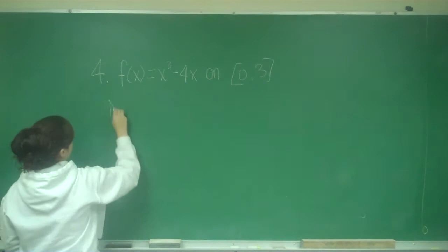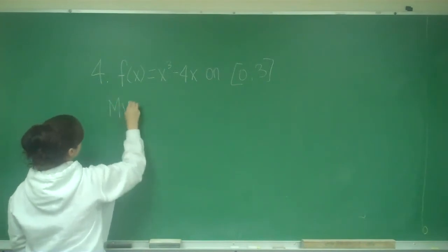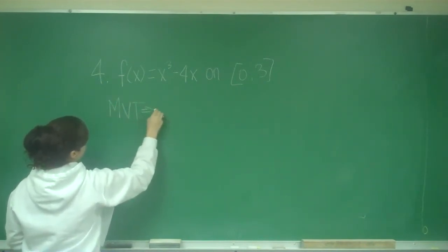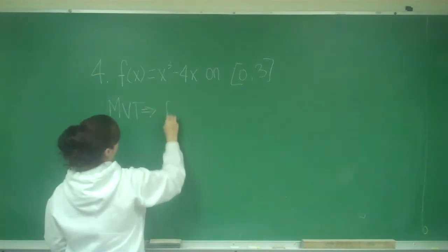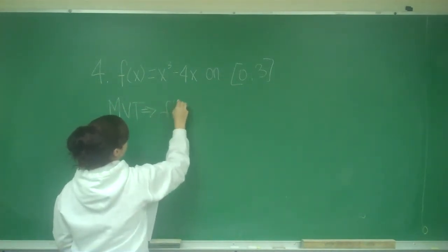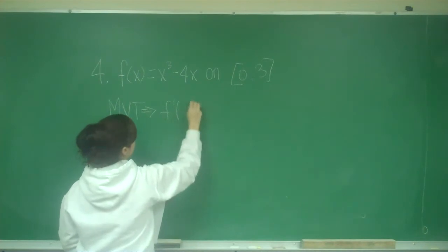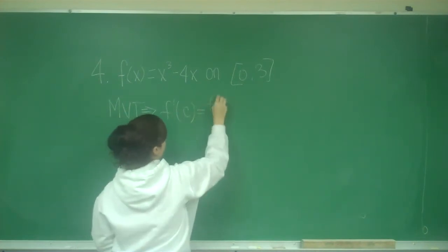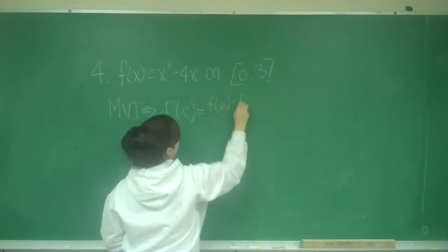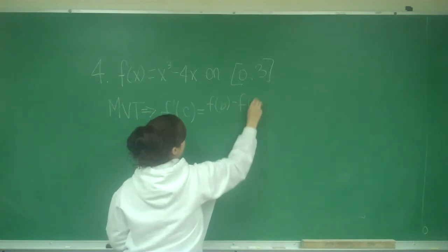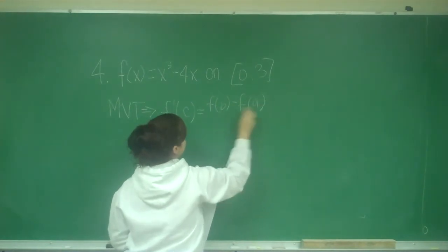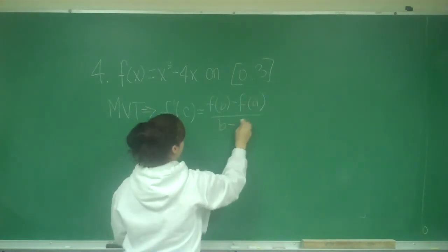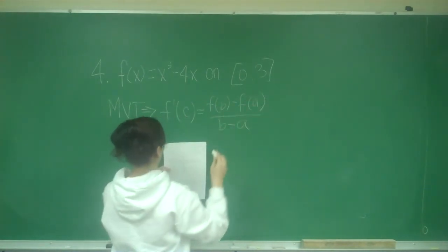The Mean Value Theorem says that there is a value C such that f prime of C equals f of B minus f of A over B minus A.